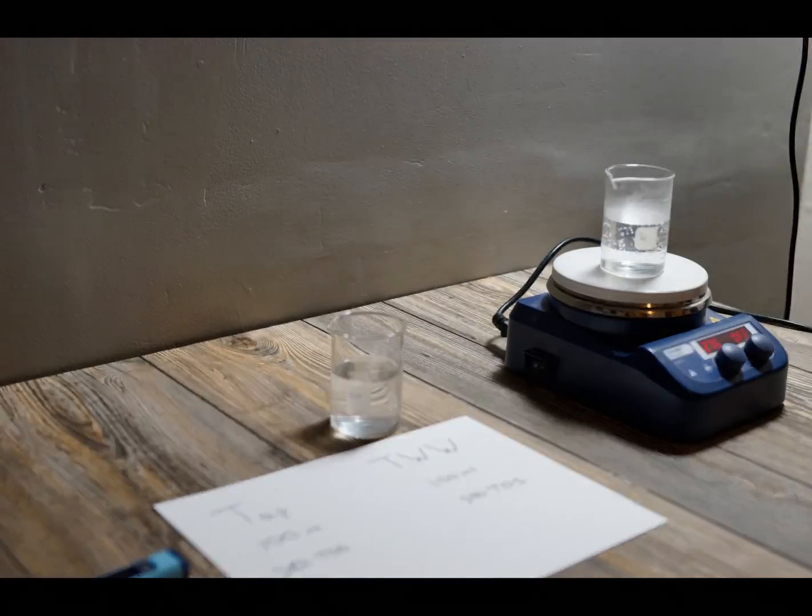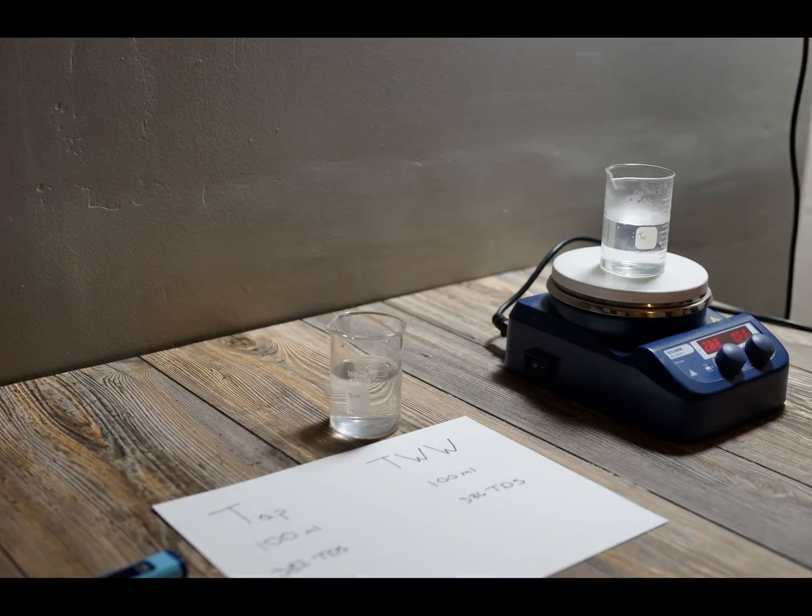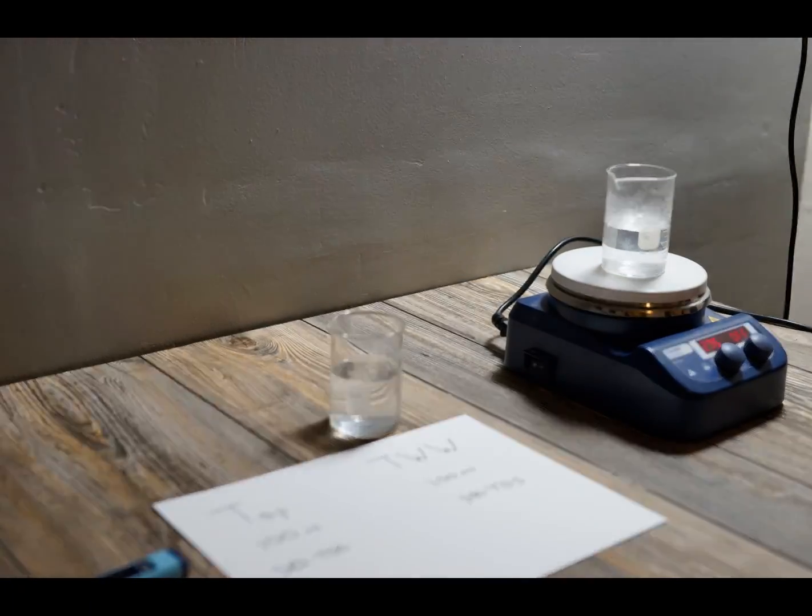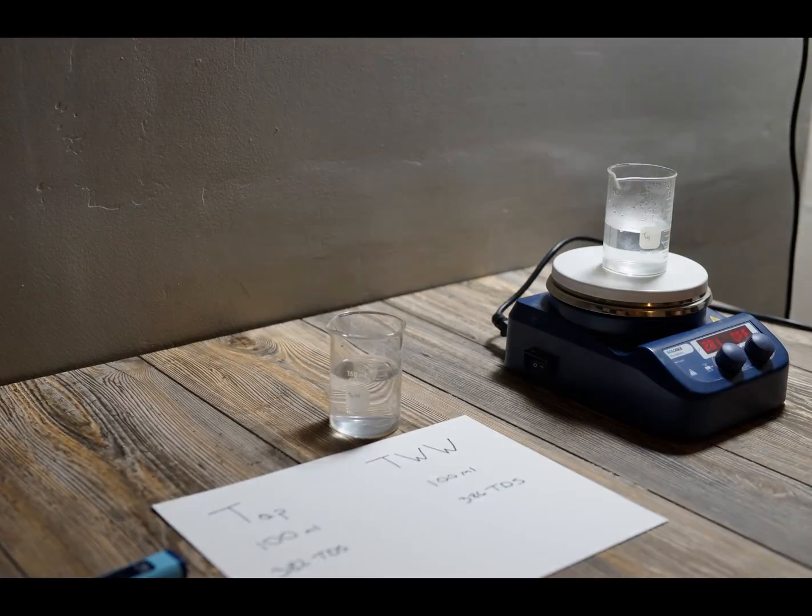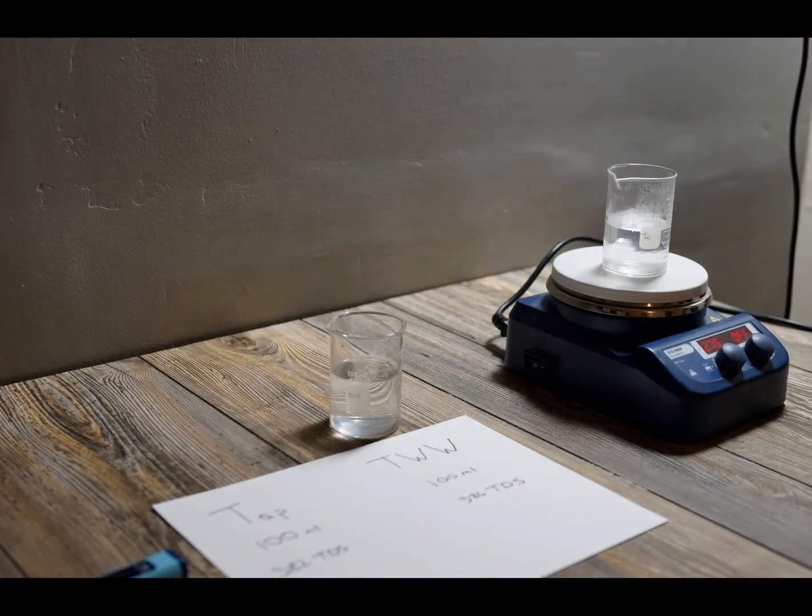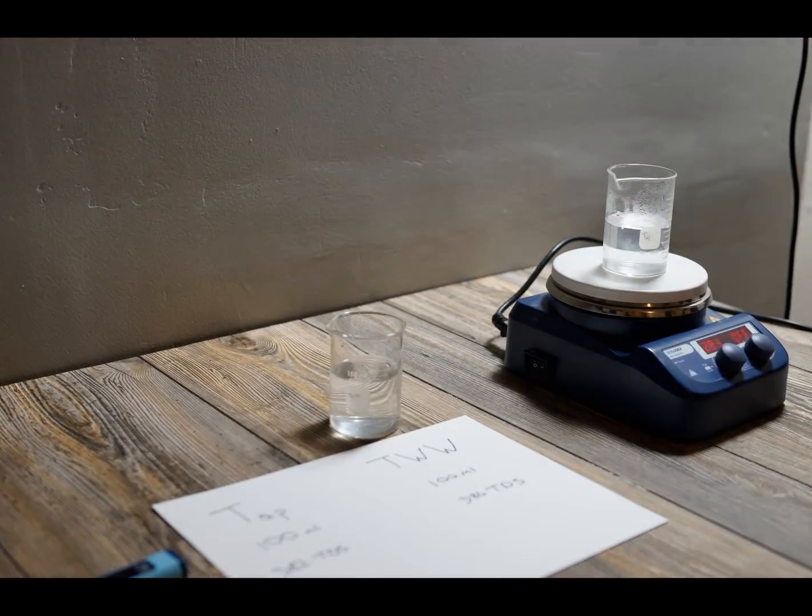Today we set up a little experiment to show the differences between the two. In each of these beakers, we have approximately 100 milliliters of each solution, and they're each around the same TDS. We have really hard water here in Ohio, so it's great for showing the effects of temporary hardness.